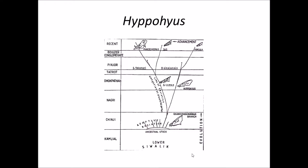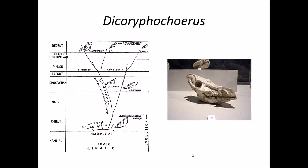Hepohias were pig-like creatures and we put them into the family Suidae. Sus were also pig-like creatures that belong to the family Suidae. Dichorypha coerus are also wild pig-like creatures that belong to the family Suidae.